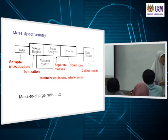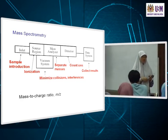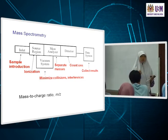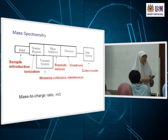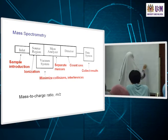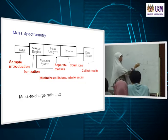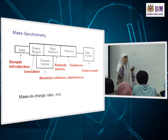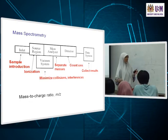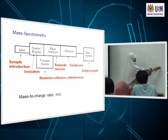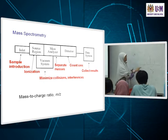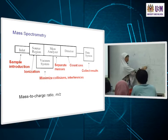What does a mass spectrum look like? Remember we are now looking at ions of different masses — counting them. You can think of the detector as a counter: when an ion hits it, it counts one. So the mass spectrum has mass on the x-axis and counts on the y-axis. The higher the peak, the more of those particular ions there are.